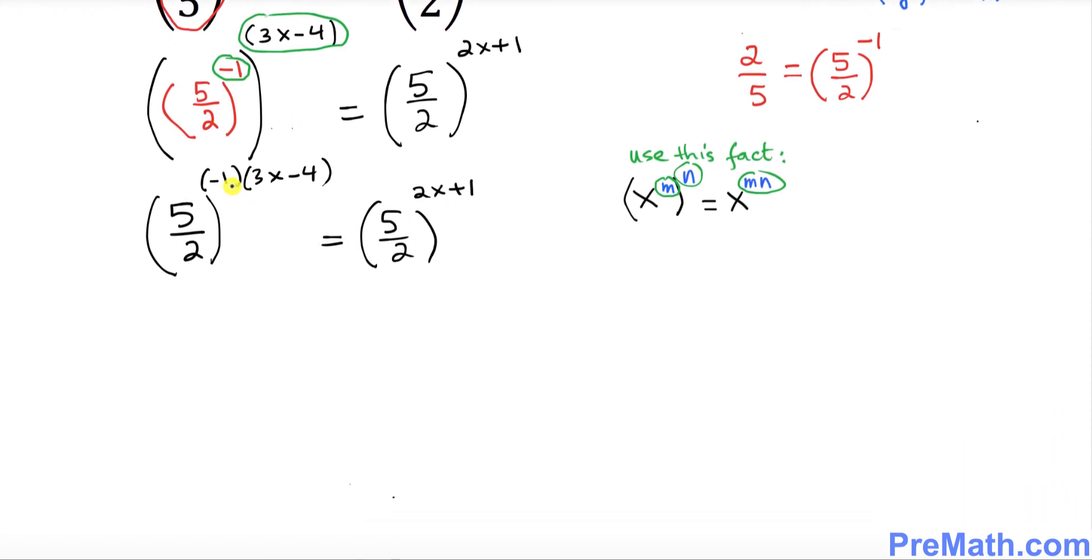Let's distribute this negative 1 and take care of this thing. So 5 over 2 power: this simply becomes negative 1 times 3x becomes negative 3x, and then negative 1 times negative 4 is positive 4 equals to 5 over 2 power 2x plus 1.